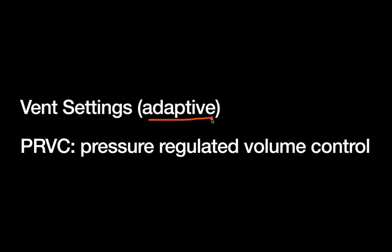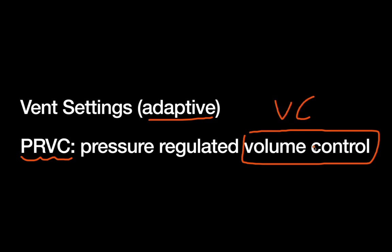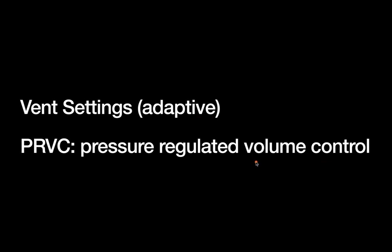Moving on to adaptive vent settings, the one we typically use at our institution is PRVC — pressure regulated volume control. This is adaptive, meaning it adjusts ventilator settings based on data from the patient's previous breaths. Volume control is the underlying mode, and the ventilator regulates settings based on the pressure it's sensing from the patient. In plain terms, the ventilator attempts to achieve a set tidal volume at the lowest possible pressure, controlling both volume and pressure to preserve the lungs.